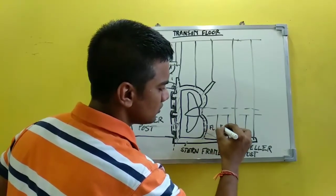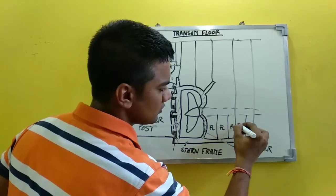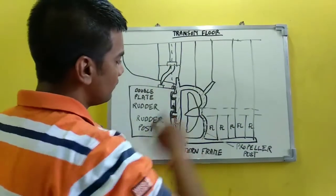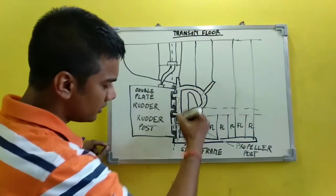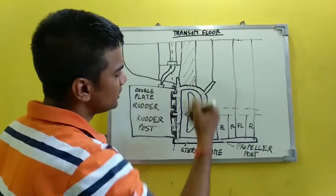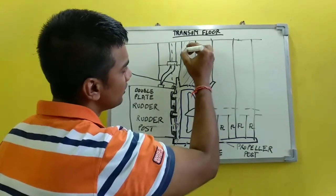These are the flows. Now the flow which connects the rudder post, this flow, the flow which connects the rudder post is called your transom flow.